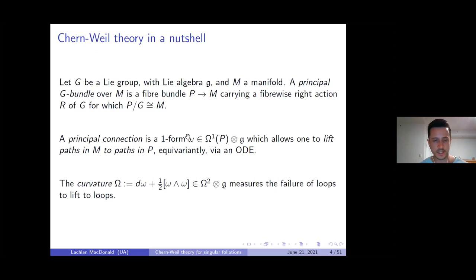Associated to any principal connection is the curvature, given by this expression. It's again a Lie algebra-valued form, and effectively it measures the failure for higher-dimensional submanifolds to lift to higher-dimensional submanifolds.